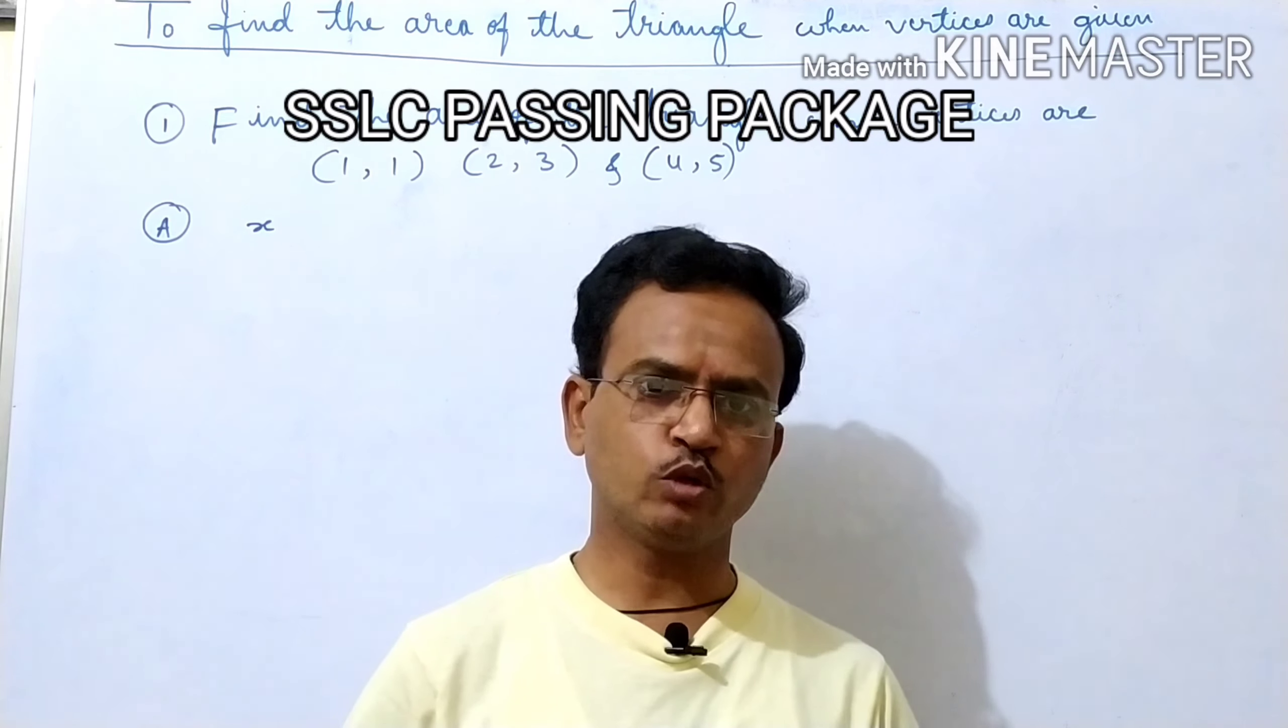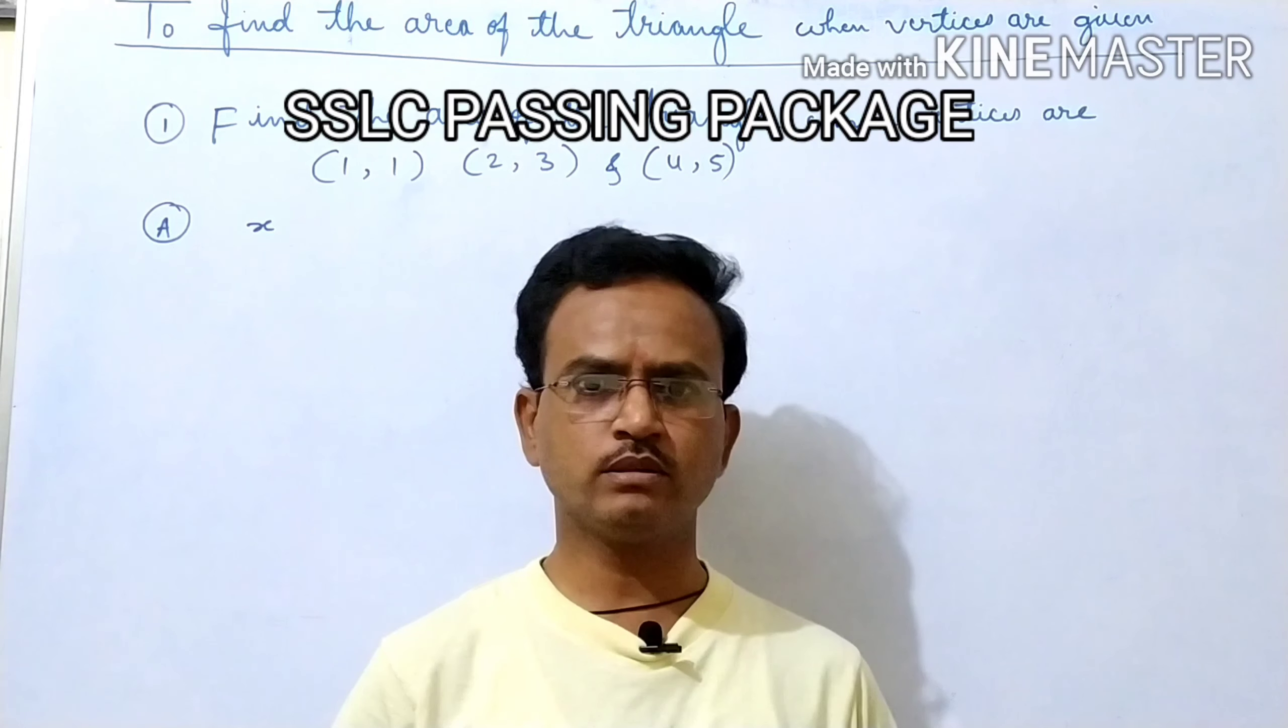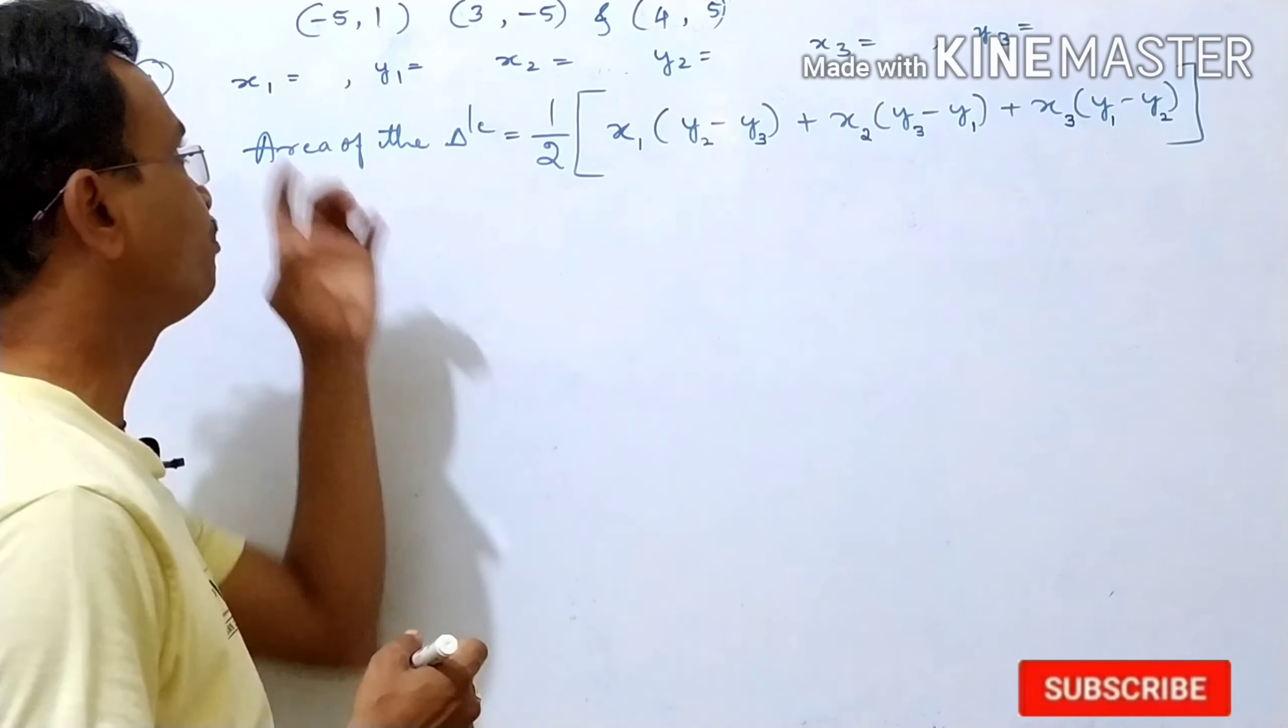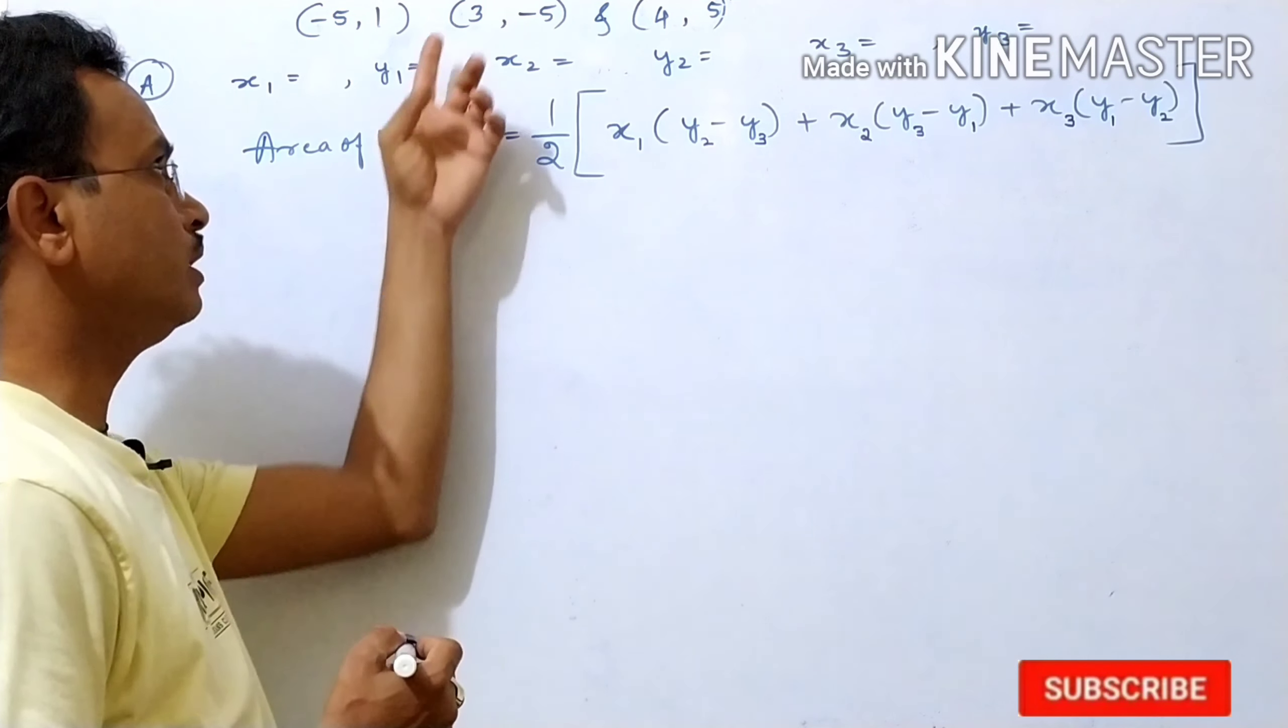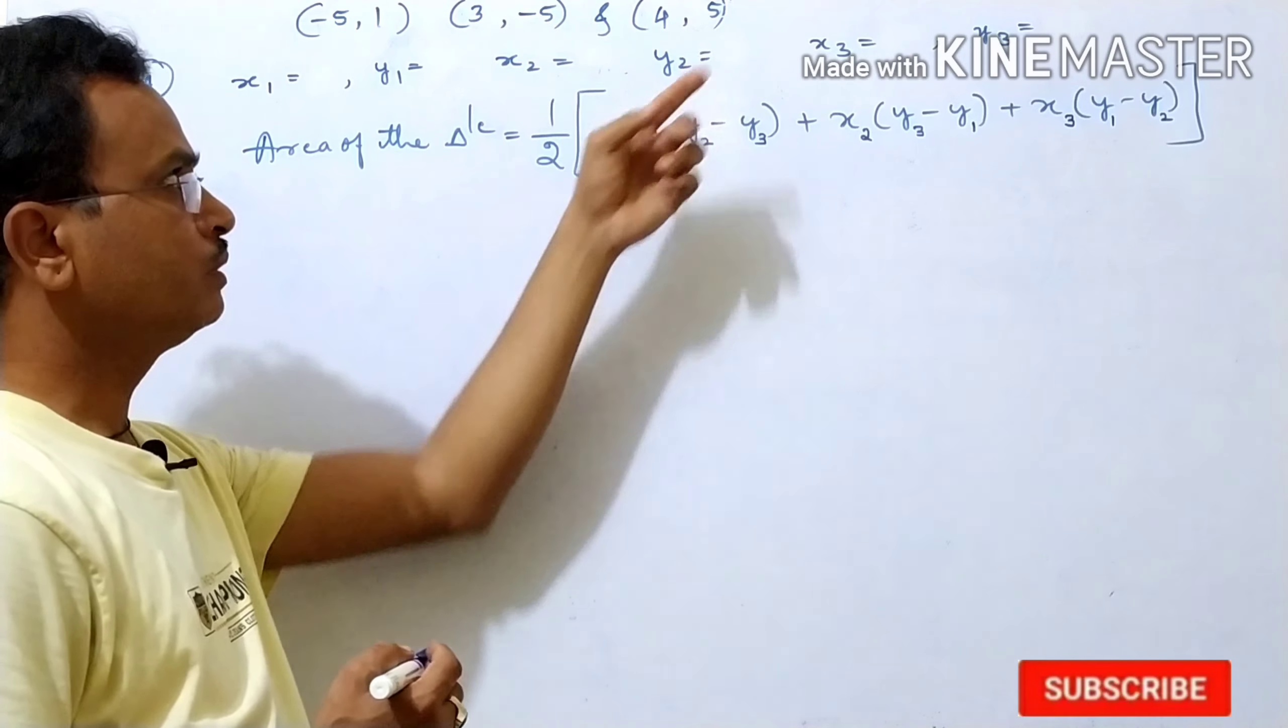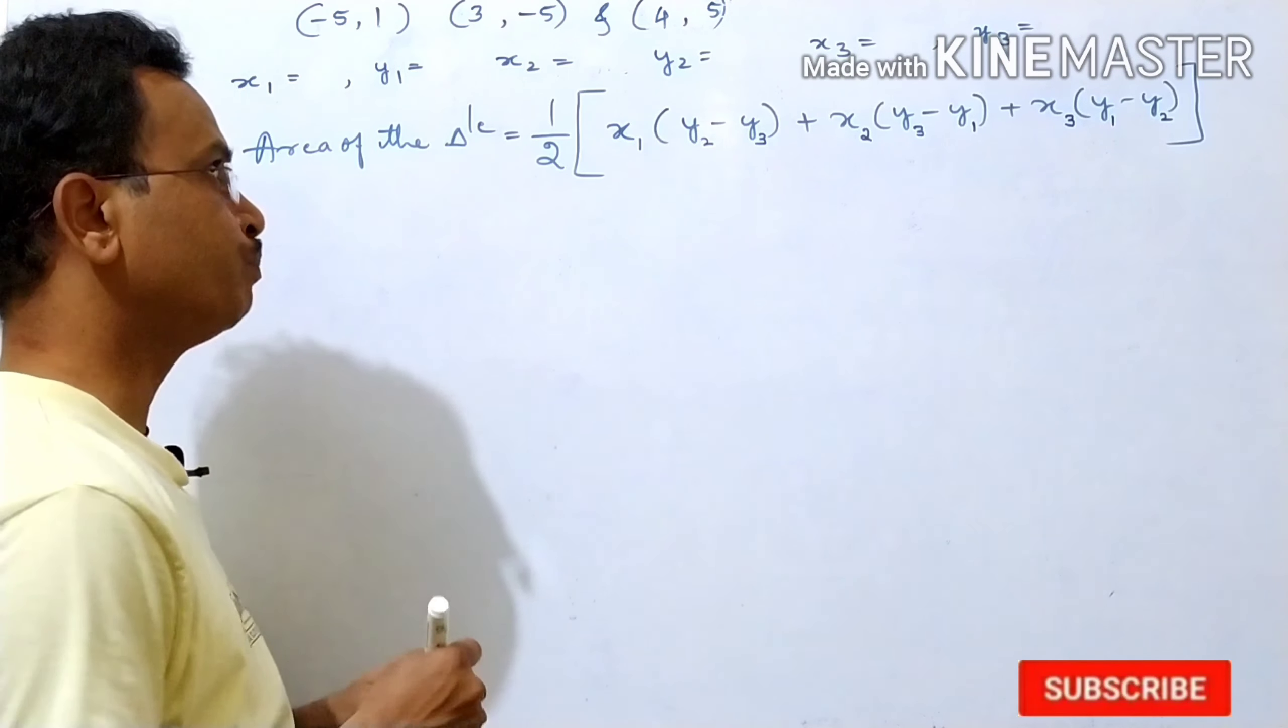Passing package on coordinate geometry. Part 4: the coordinates are minus 5, 1 and 3, minus 5 and 4, 5.